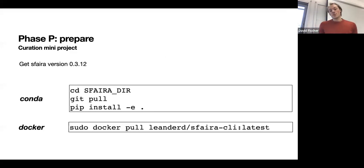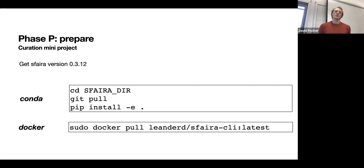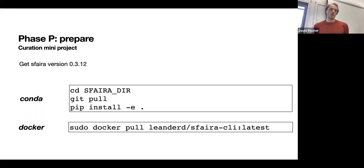Before we start with the slide-based introduction, make sure you have Sphira version 0.3.12 — we updated this a few hours ago. If you're using Docker, run the Docker command we posted to update in the background. If you use conda, just pull Sphira again and install it. Let us know if you have questions; it should be relatively quick. Keep in mind you want version 3.12.